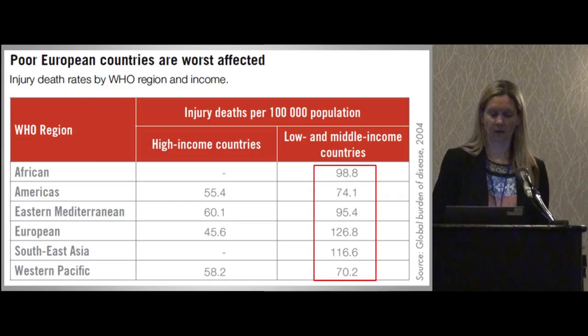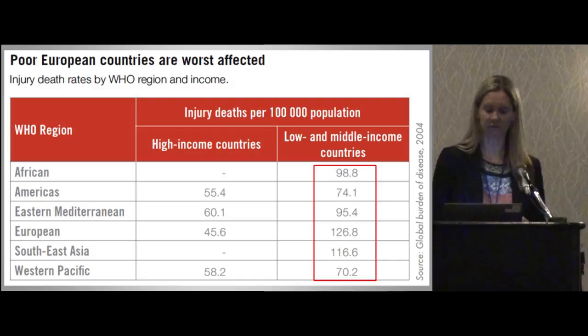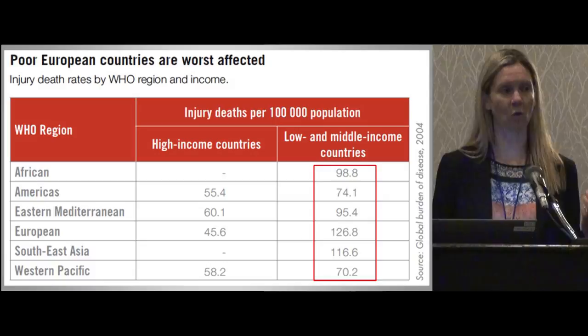It really makes a difference in terms of what country you're from. This is a worldwide problem, but it mostly affects low- and middle-income areas. Even within Europe, there are 45 deaths per 100,000 in high-income countries versus 126 per 100,000 in low- and middle-income countries. So it's partly where you are geographically, but it's mostly a matter of the socioeconomic state of your country.